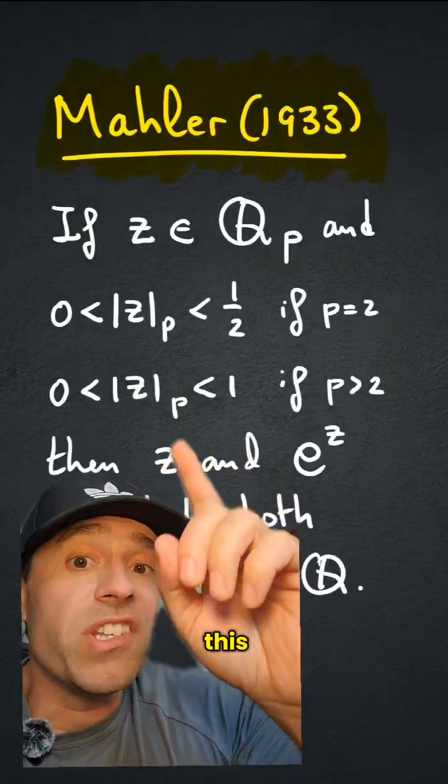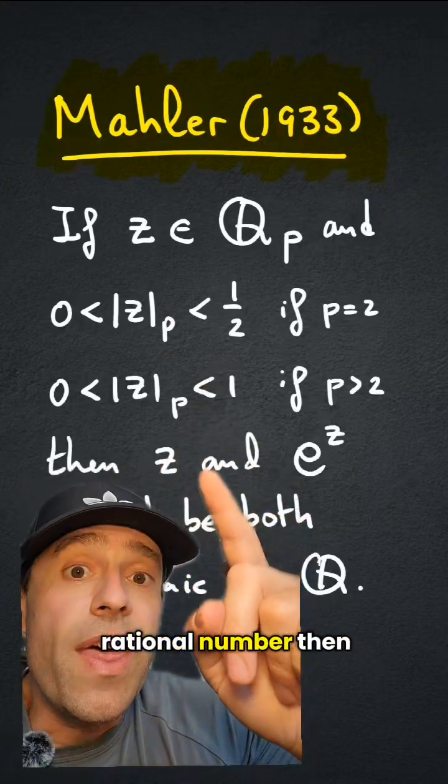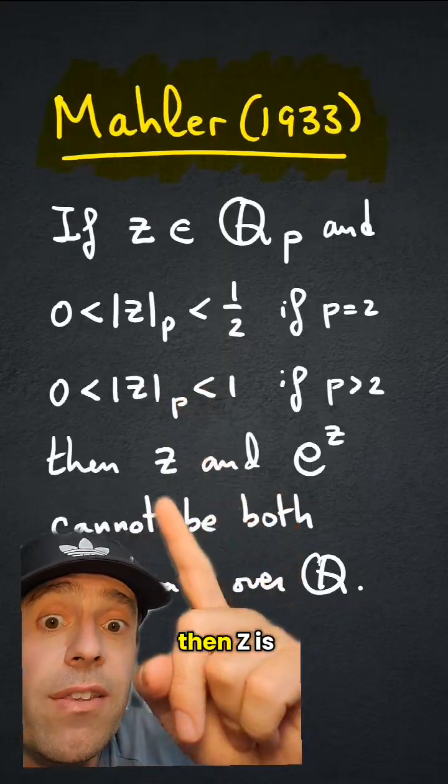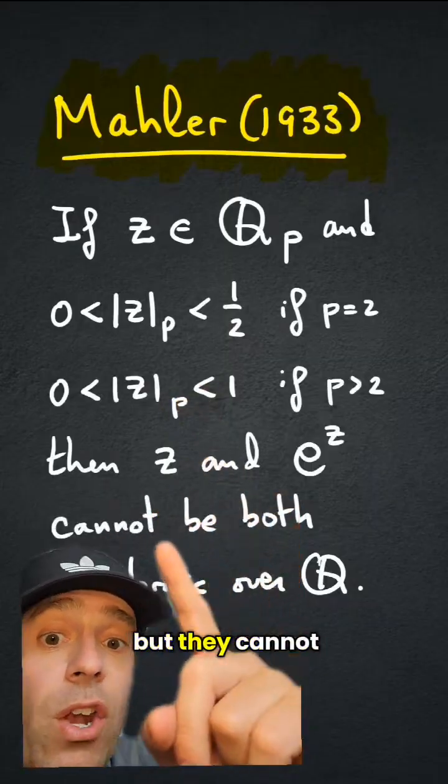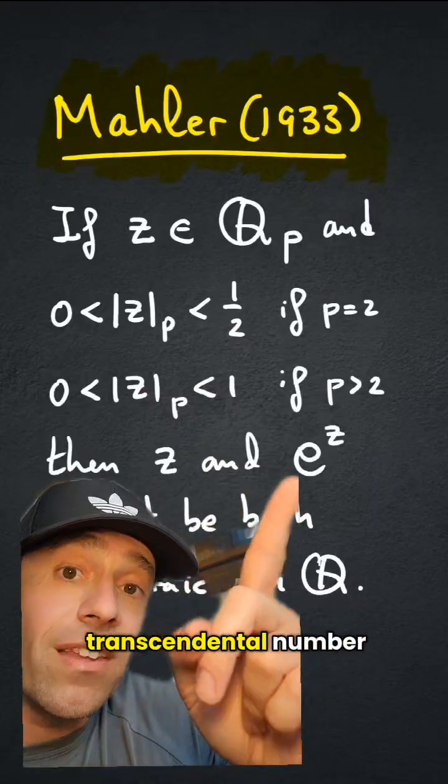How are we going to use this? Just take z to be a rational number, then, well, with this property, then z is clearly algebraic, but they cannot be both algebraic, so that means that e to the z has to be a transcendental number.